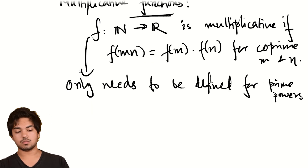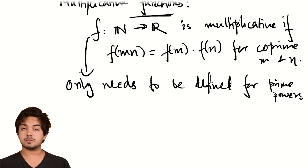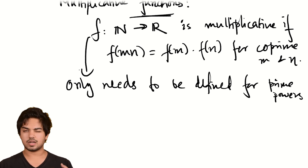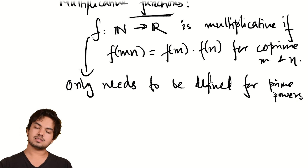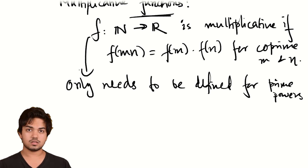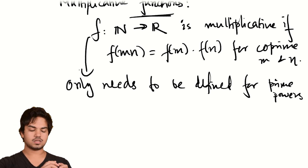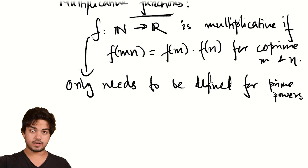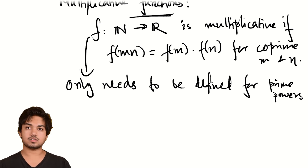A lot of the arithmetic functions of interest to us have this property. A function is also called totally multiplicative if you don't need the coprime condition — it works for all m and n — but that is less common. The idea is that many functions of interest to us highlight some part of the multiplicative structure of the natural numbers, and because the multiplicative structure of the natural numbers is completely determined by the primes, that's why so many of these functions have this property.